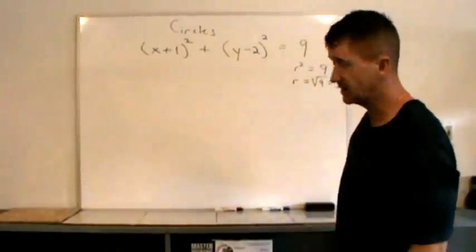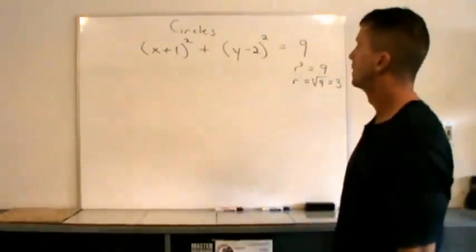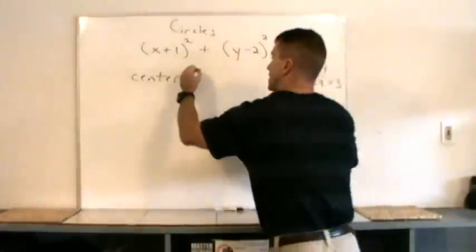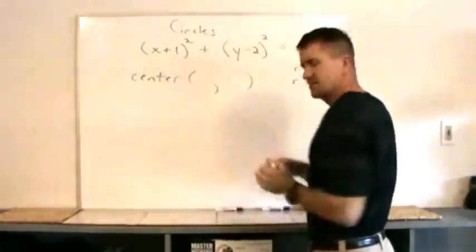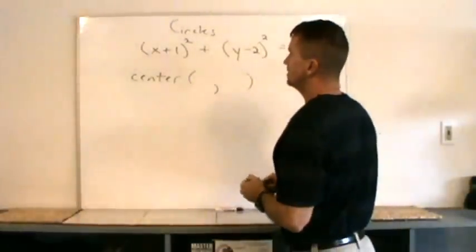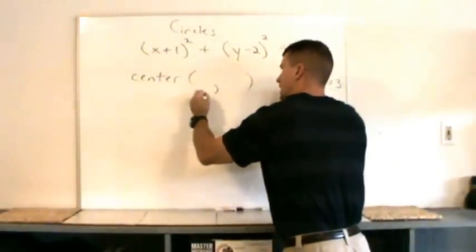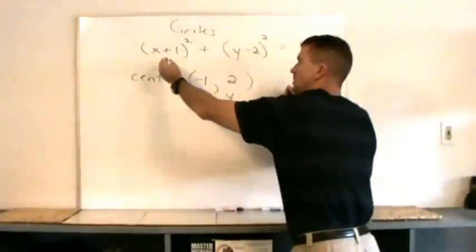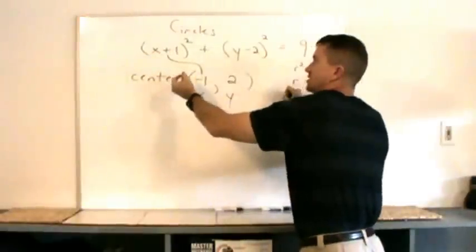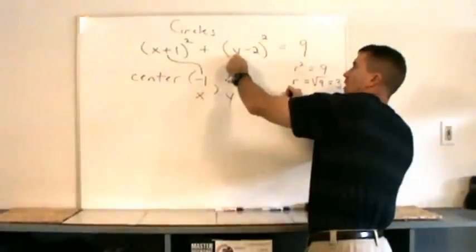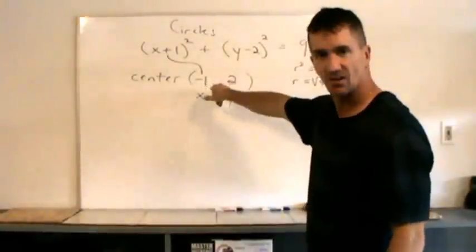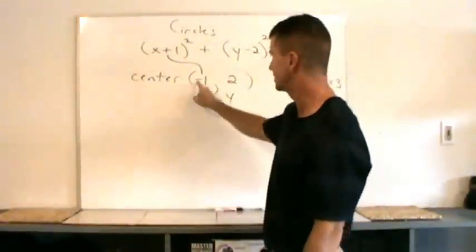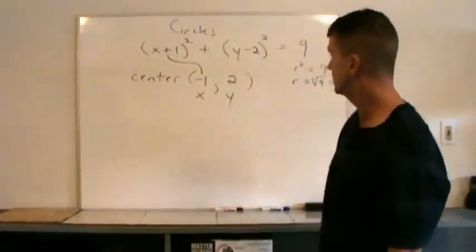Where will the center of this circle be? Since it shifted and transformed, the center is no longer the origin. The center is determined by the values that make each expression zero: negative one plus one equals zero, and two minus two equals zero. So the center is at negative one comma two. The sign in the equation tells you: it's a plus sign for x, so the center x-coordinate is negative; it's a minus sign for y, so the center y-coordinate is positive two. The radius is three.